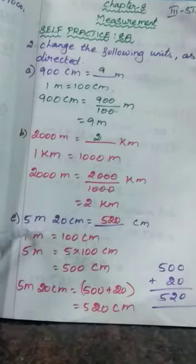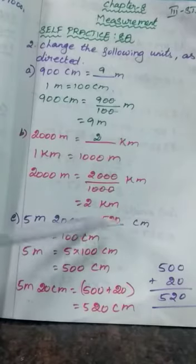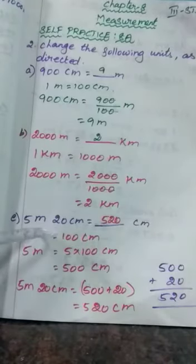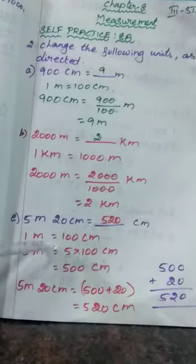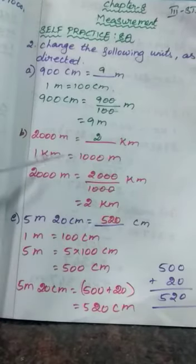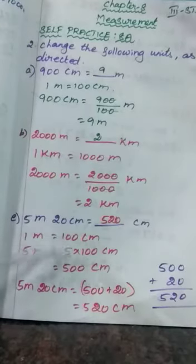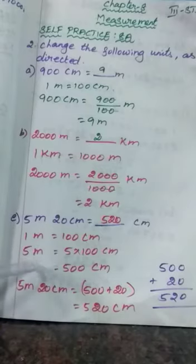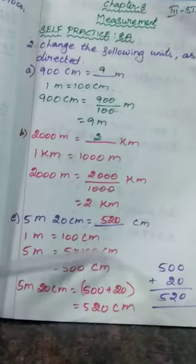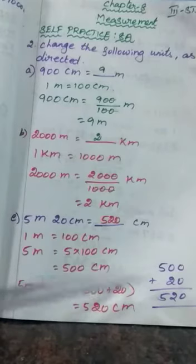Next sum, part C: 5 meter 20 centimeter equals dash centimeter. In your question, meter and centimeter are given. So first you have to convert the meter into centimeter, then add 20 to the answer. This is biggest to smallest — biggest to smallest means you have to multiply. Write the formula: 1 meter equals 100 centimeter. So 5 meter equals 5 into 100 equals 500 centimeter.